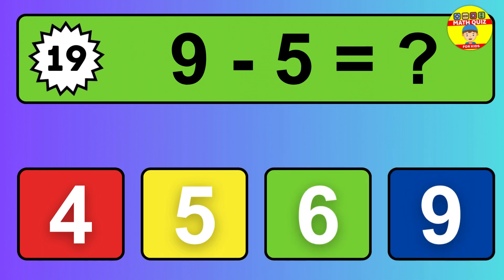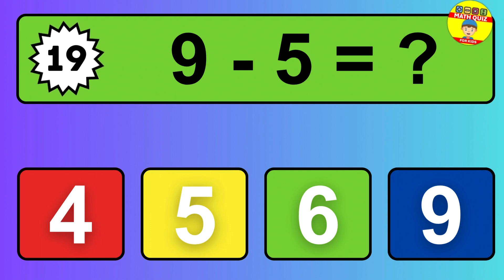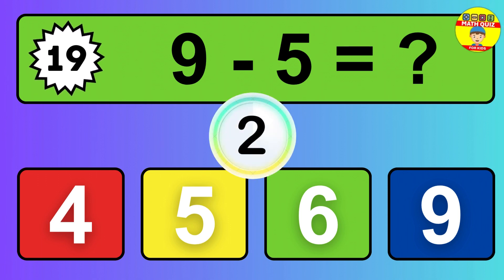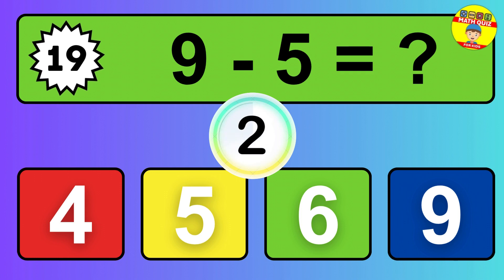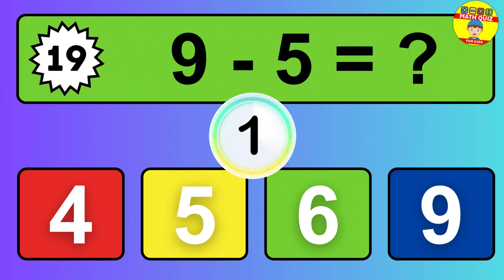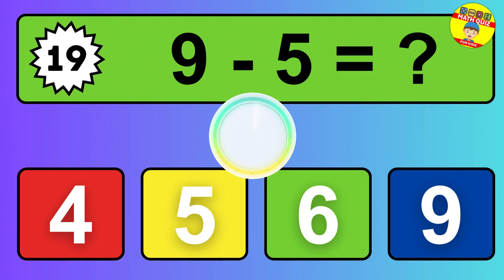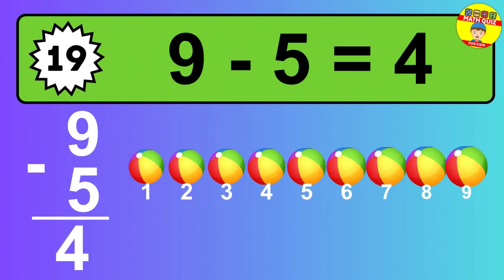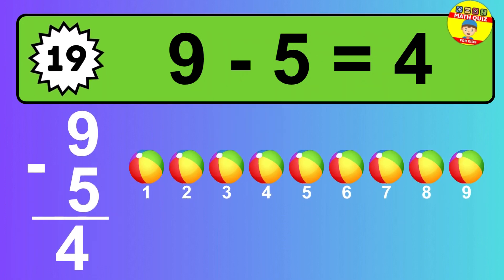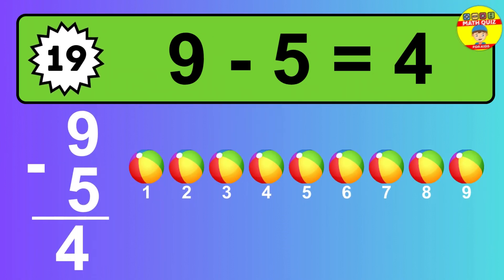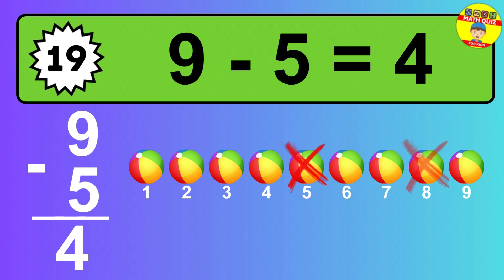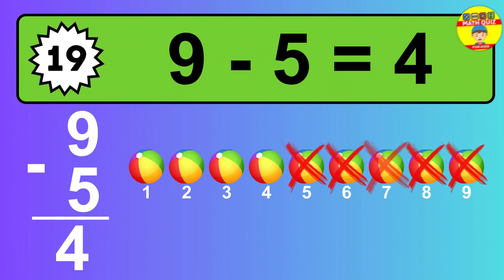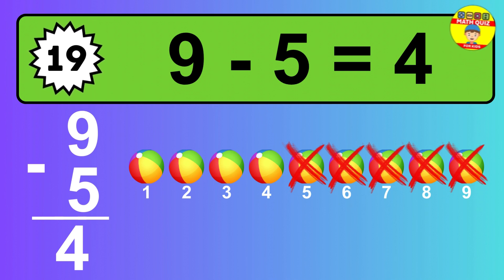Question 19. 9 minus 5 equals what? The answer is 9 minus 5 is 4. Let's count it. 1, 2, 3, 4.